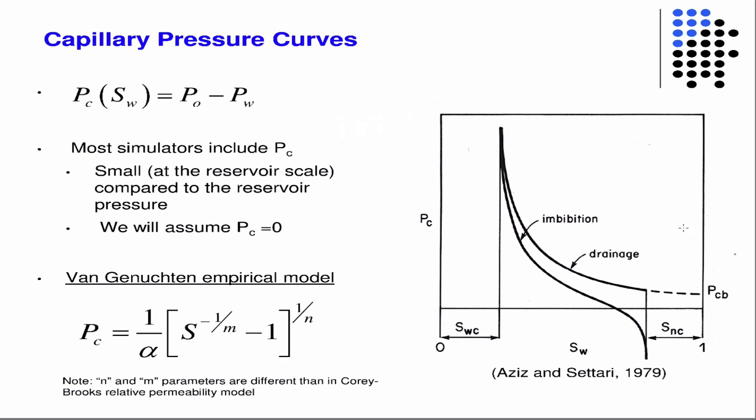So the nice thing, I mean, most reservoir simulators would include some type of capillary pressure, but we're just going to assume it's zero. So we're going to say that the capillary pressure is a function of the difference in the oil and the water pressure. But on the left-hand side, that's just, and we're going to use that as a closure relationship, so we need the equation. But on the left-hand side, it's just going to be equal to zero. Essentially, that's just saying that the pressure in the oil equals the pressure in the water.